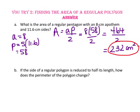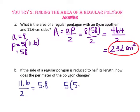For part B, if the side of a regular polygon is reduced to half its length, how does the perimeter of the polygon change? Dividing the side length 11.6 by 2 gives us 5.8 centimeters per side. Since we have a pentagon, 5 sides times 5.8 gives us a perimeter of 29 centimeters. Comparing that to our perimeter from part A, 29 is half of 58. So when you halve the length of each side, you get a perimeter that is half the length of the original.